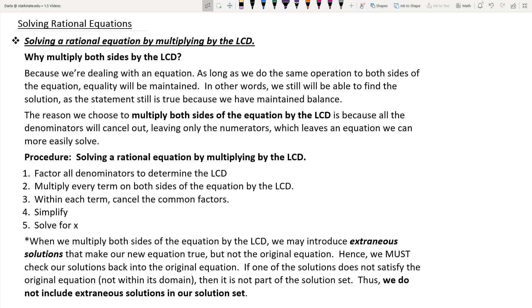And the reason we would choose the least common denominator as our multiplier is because this actually allows all the denominators of all the rational expressions to be canceled out, leaving us with an equation that we can more easily solve.